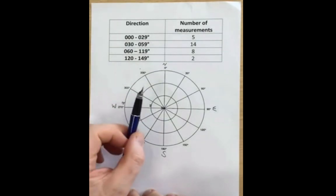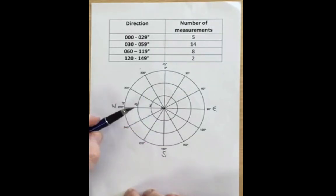So we now have our two axes plotted. We've got our compass directions as the radial lines, our number of values as the concentric circles. For the example I've given you here, you'll see I've identified a number of measurements.